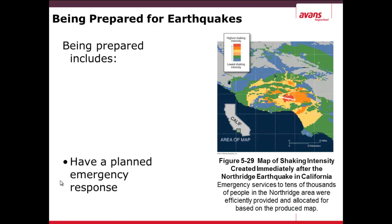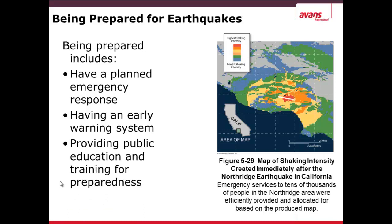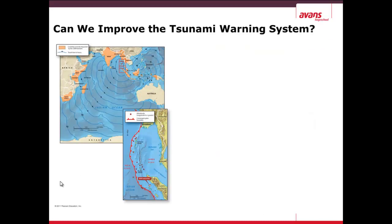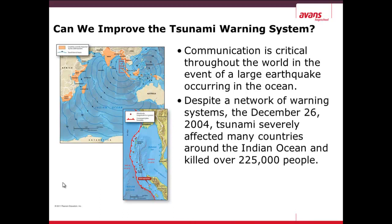Preparation for earthquakes includes having a planned emergency response, an early warning system, and public education and training for preparedness. We can also provide a tsunami warning system. Communication is critical for tsunamis because, as studied, the Chile earthquake had devastating effects in Japan on the other side of the ocean. Even though tsunami waves travel at 500 kilometers per hour, good communications would allow countries to be notified. However, the 2004 tsunami warning system was not quick enough or extensive enough to warn the 225,000 people who perished.